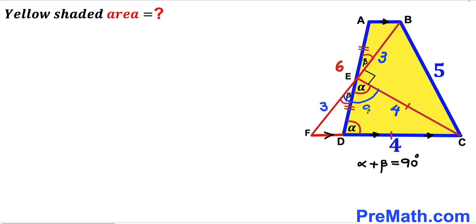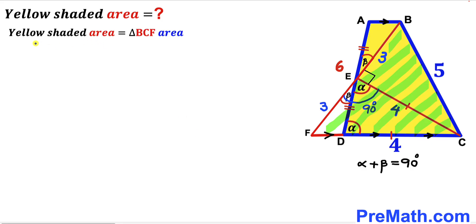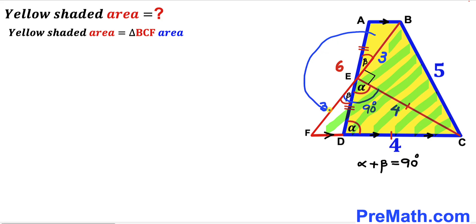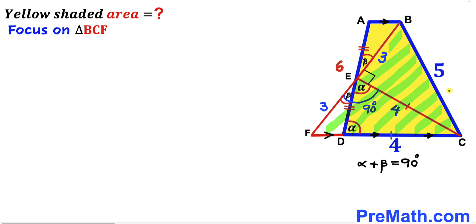Let's observe that angle CEF equals alpha plus beta, and we know alpha plus beta always equals 90 degrees. Therefore angle CEF is a 90 degree angle. We can see that the yellow shaded quadrilateral area equals the area of triangle BCF, since the auxiliary triangle is congruent to the shifted region. Therefore it is sufficient to calculate the area of triangle BCF.